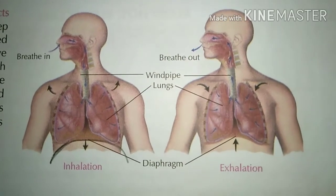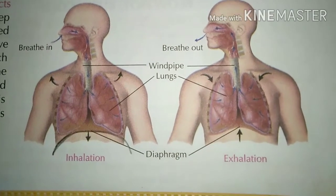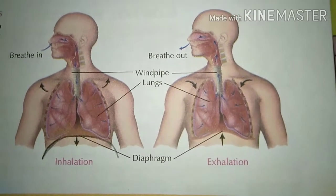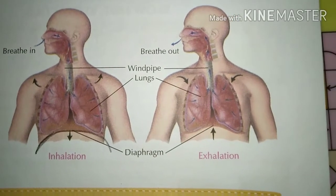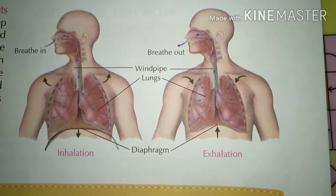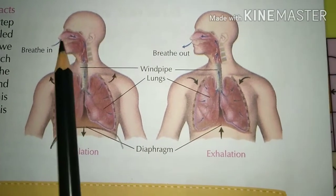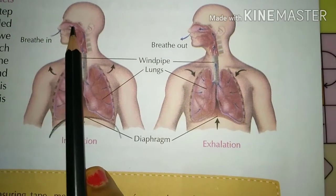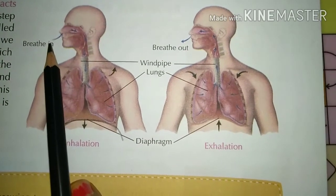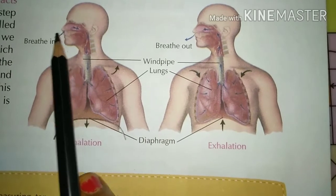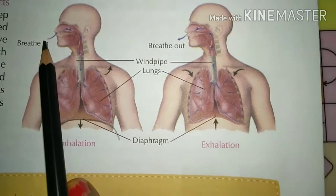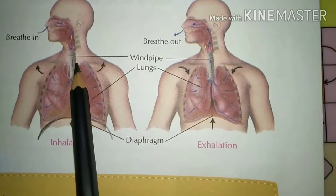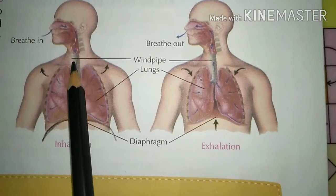Before I start the process of breathing, you must know about the parts of your respiratory system. This is the diagram of the respiratory system. Let's identify the important parts that play a role in breathing. This is our nose — the nostril — it is a part of our respiratory system. We take air in through our nose, which is known as breathing in. The air then moves downward towards the windpipe.